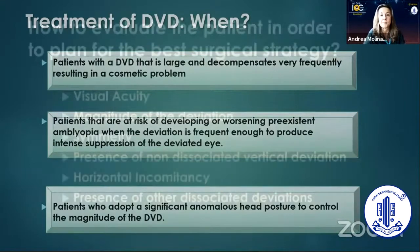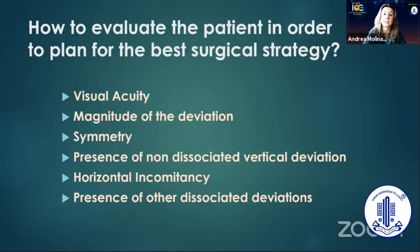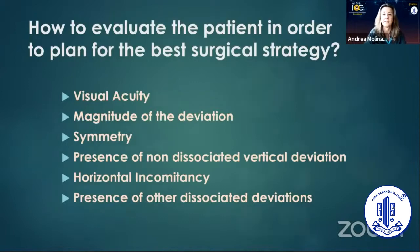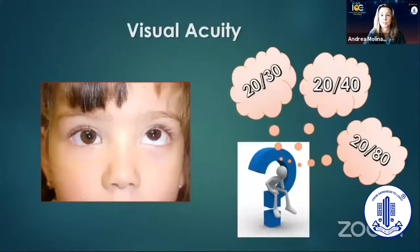It is very important to study our patients thoroughly. The things we are going to look at in these patients are the visual acuity, magnitude of the deviation, the symmetry of the deviation, presence of non-dissociated vertical deviations, horizontal incomitancy, and the presence of other dissociated deviations, in order to come up with an appropriate surgical plan.